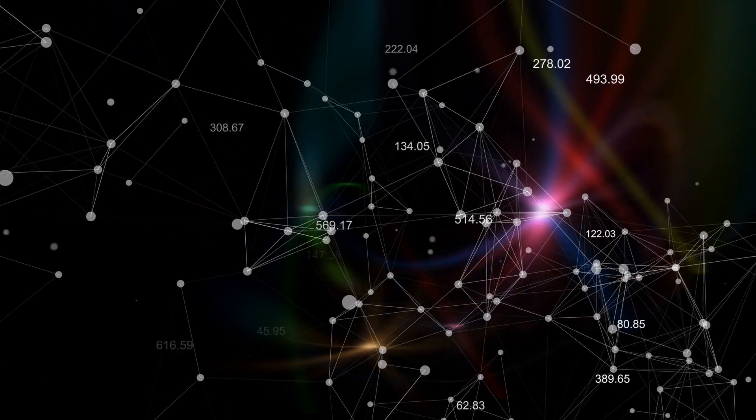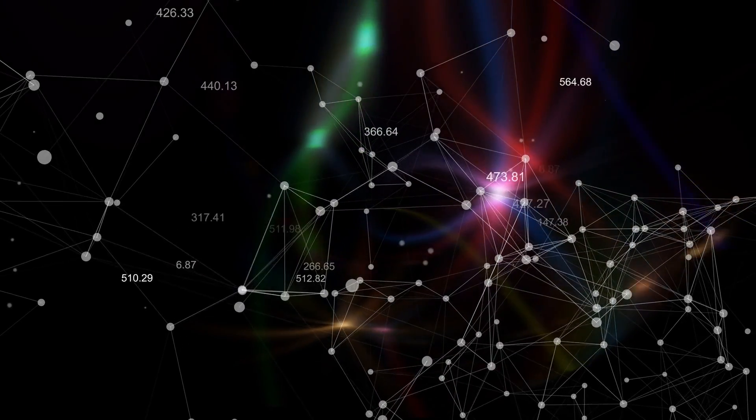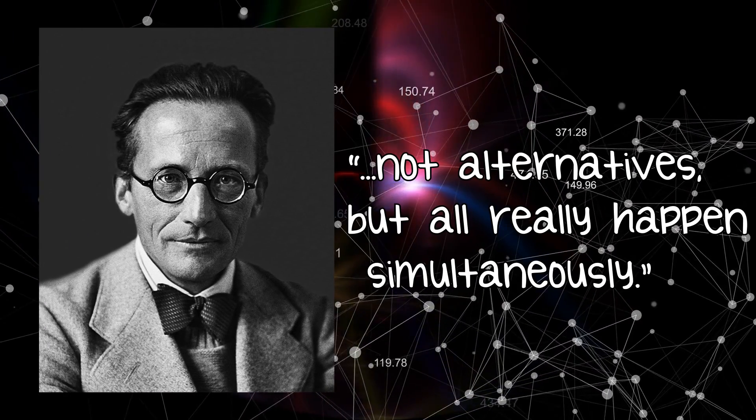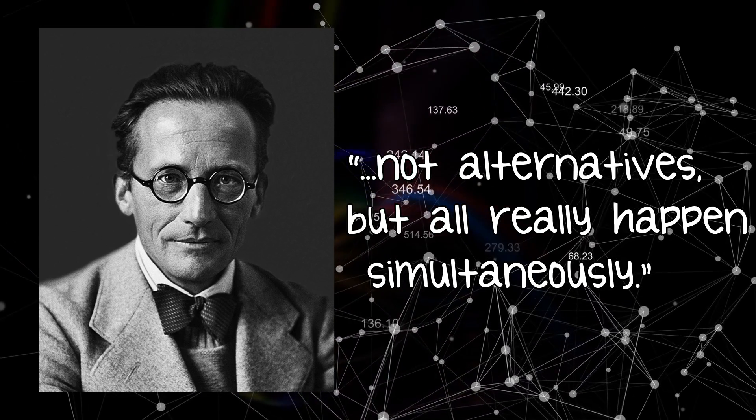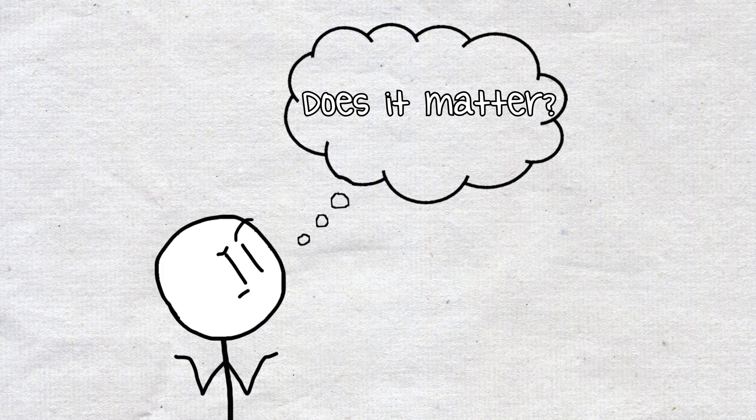The idea that there could be more universes in existence than just our own dates back to at least 1952, when Erwin Schrodinger stated that when his Nobel equations seemed to describe several different histories, these were not alternatives, but all really happened simultaneously. That being said, it's nearly impossible to pin down a date for the inception of multiverse theory, because it consists of many very different and often fundamentally opposing hypotheses.